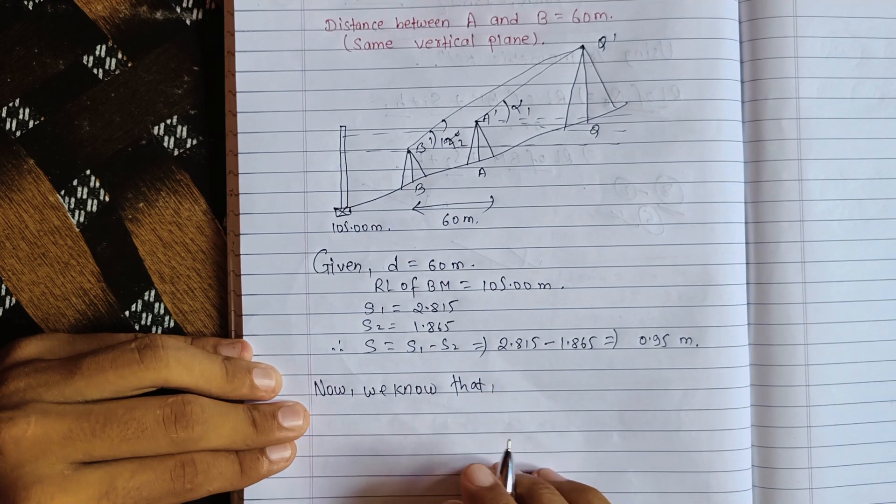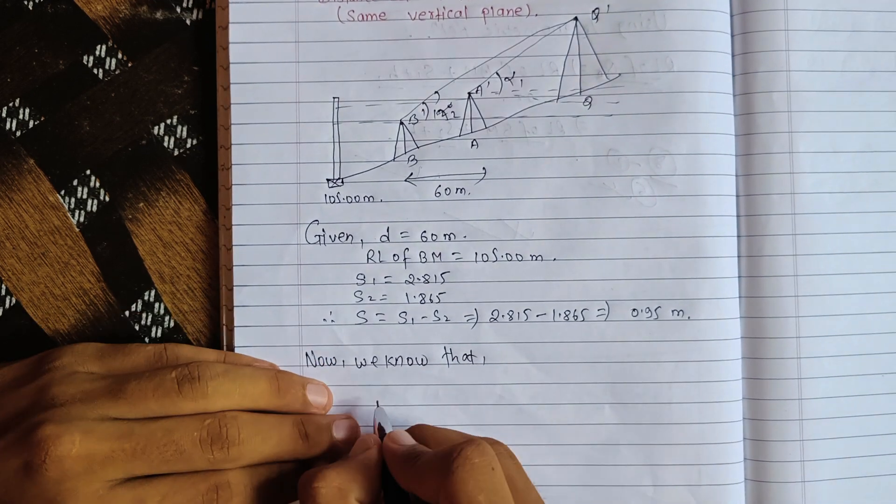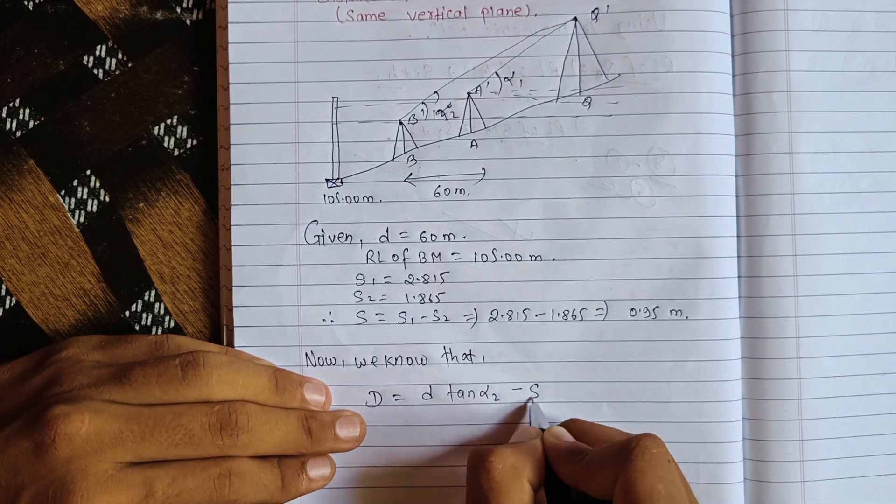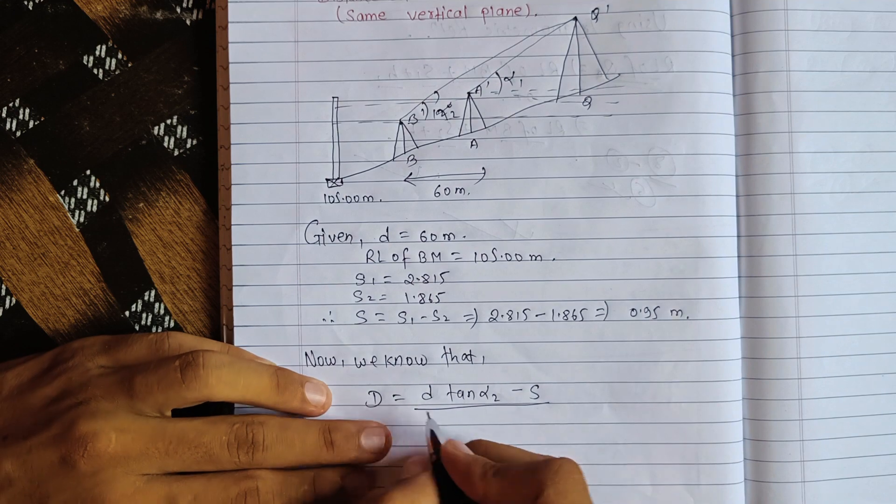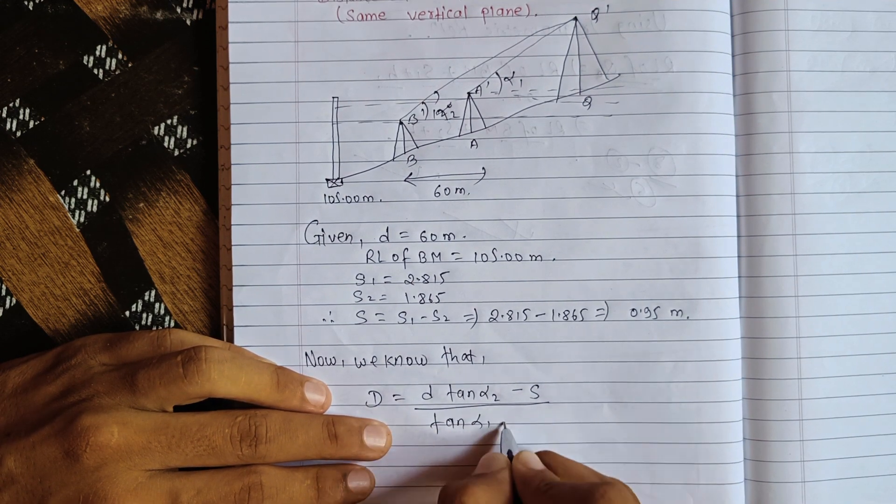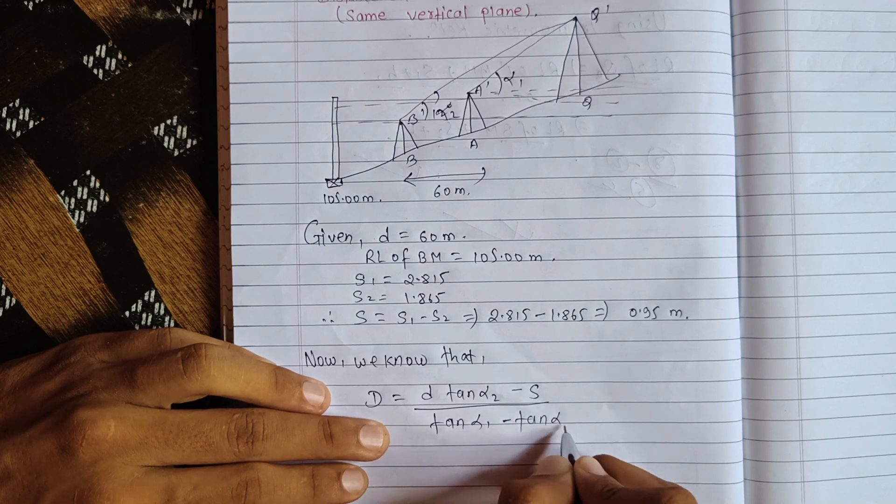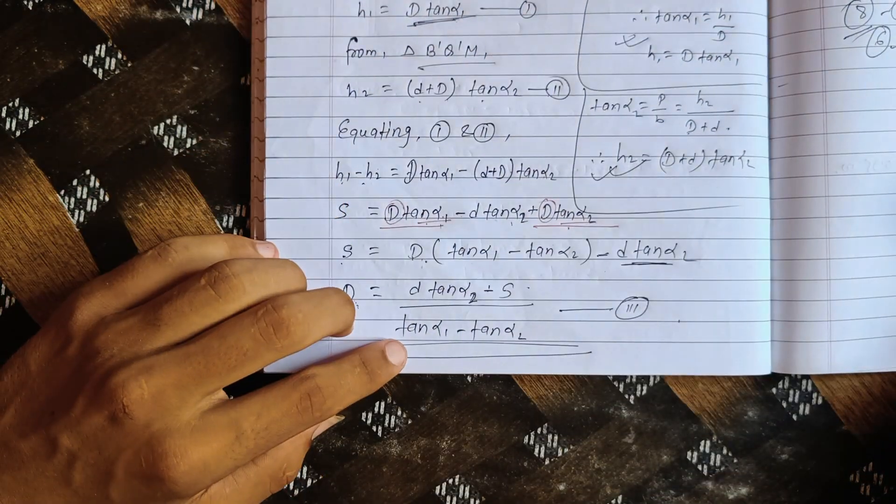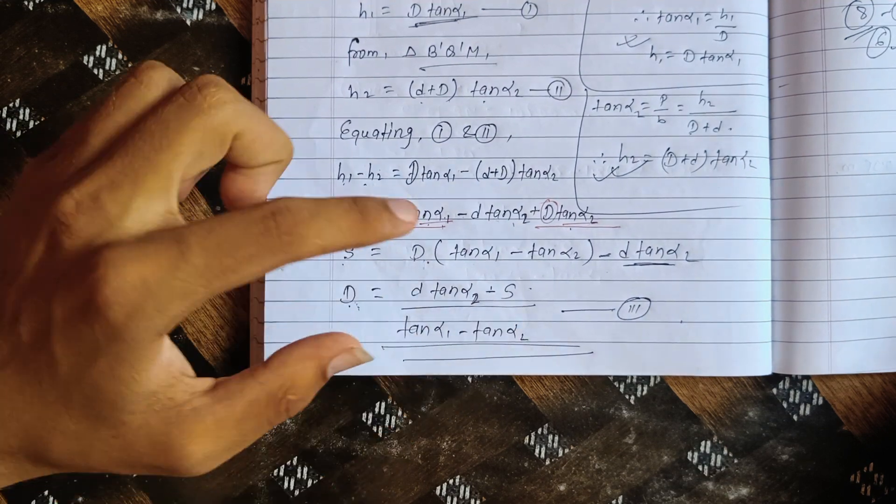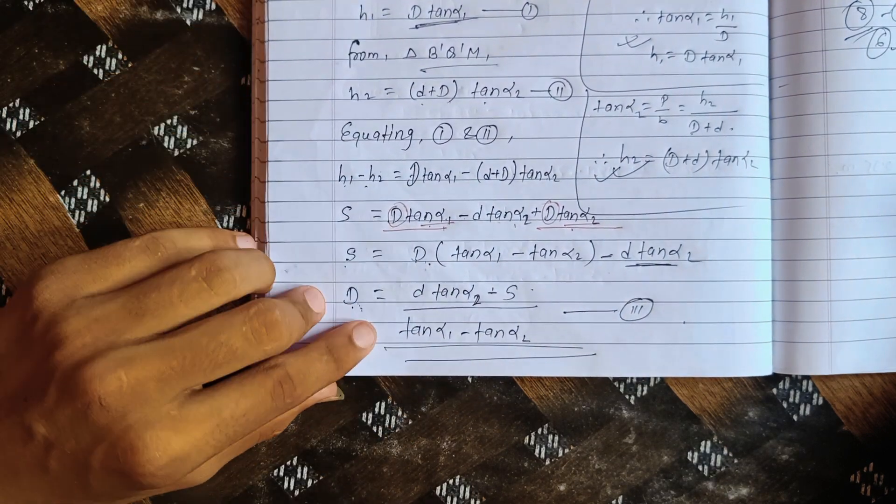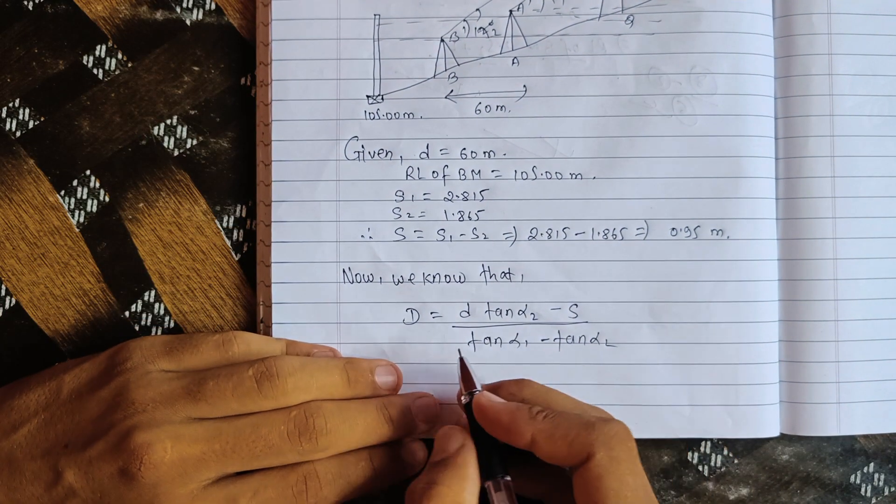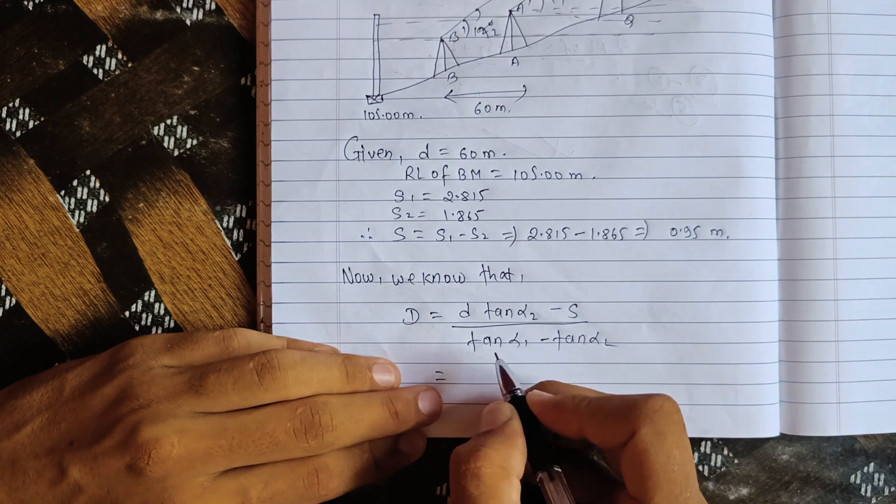The formula is D equals S times tan(alpha2) minus S, divided by tan(alpha1) minus tan(alpha2). This is the formula. We have S, tan(alpha2), minus S, divided by tan(alpha1) minus tan(alpha2).